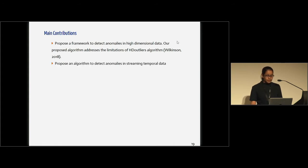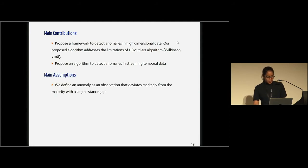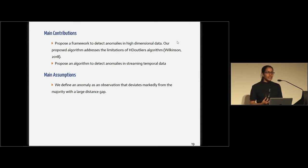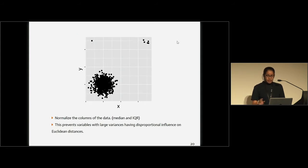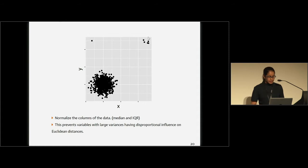We also propose an algorithm to detect anomalies in streaming temporal data. In this case, we define an anomaly as an observation that deviates markedly from the majority with a large distance gap. So in Outstream we define an anomaly with respect to density, whereas here in Stray we define an anomaly with respect to distance. I'll give you the basic idea behind this proposed framework — our main focus is on high dimensional data, but to give you the basic idea I'm going to use a two-dimensional space so that you can get the idea very clearly.